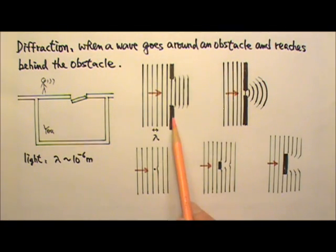What if instead of having a wall with the opening, the obstacles are like these? When the obstacle is very small compared to the wavelength, the waves would pass through them almost unaffected.